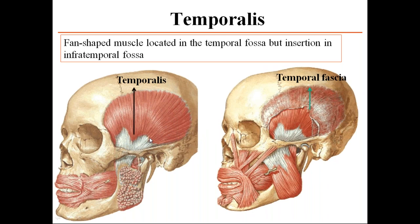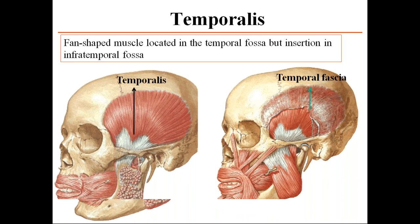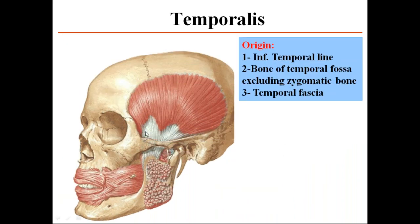The temporalis is a fan-shaped muscle located in the temporal fossa. Its origin is from the temporal fossa, but its insertion extends into the infratemporal fossa. It is covered by temporal fascia, which is attached above to the superior temporal line and below to the zygomatic arch. It arises from the inferior temporal line and the entire bone of the temporal fossa, excluding the zygomatic bone, and also from the temporal fascia.